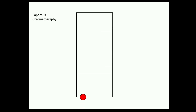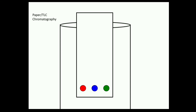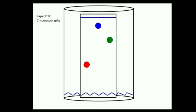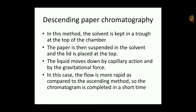A sample animation of paper or TLC chromatography shows three different samples placed in the solvent. As the solvent runs, the three spots become differentiated based on their partition coefficient — that is, based on their binding solubility differences.